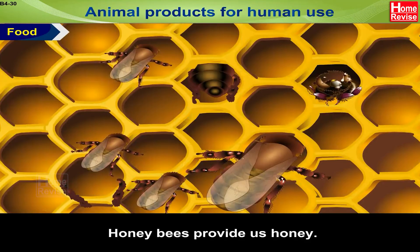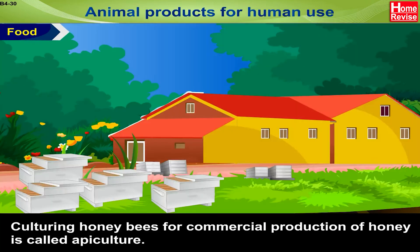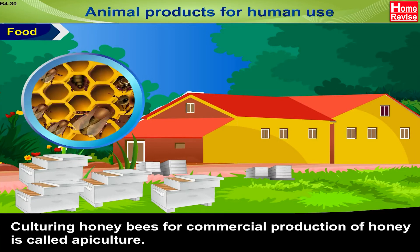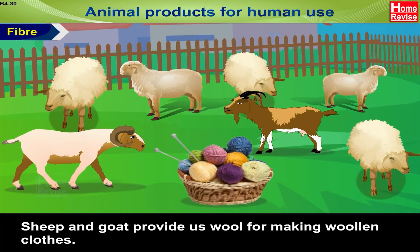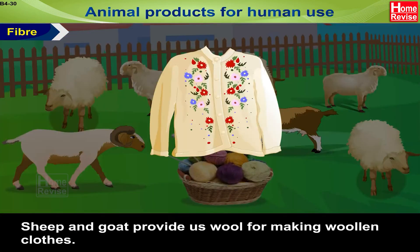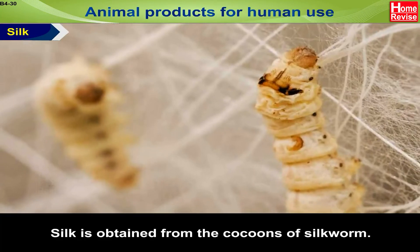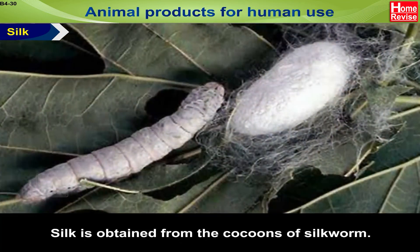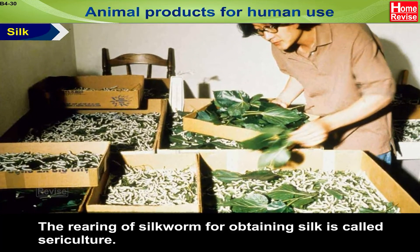Honeybees provide us honey. It is a good source of nutrients. Culturing honeybees for commercial production of honey is called apiculture. Fiber: Sheep and goat provide us wool for making woolen clothes. Silk is obtained from the cocoons of silkworm. The rearing of silkworm for obtaining silk is called sericulture.